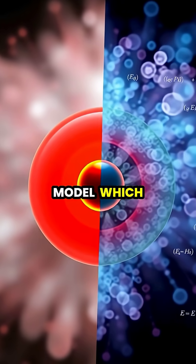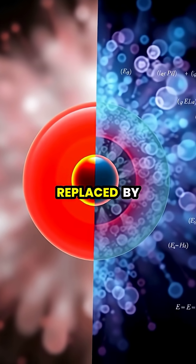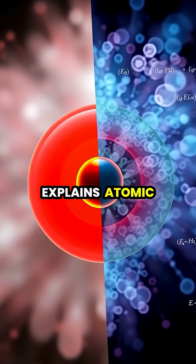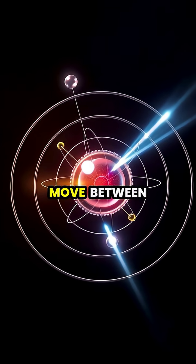The Bohr model, which depicts electrons orbiting like planets around the sun, has been replaced by the quantum mechanical model that better explains atomic behavior at the subatomic level.